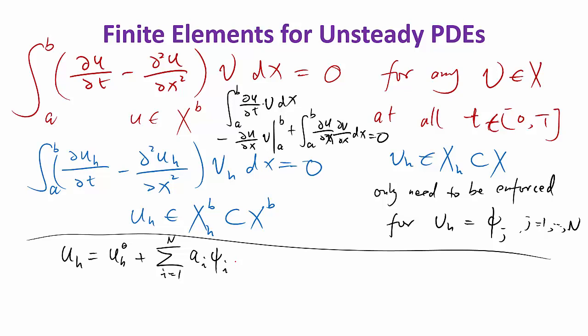This expansion is a little different from what we've used before, because u_h is a function of both x and t, instead of just x. The basis functions are just functions of x. What makes u_h a function of t is that the a's are functions of t. At different times the basis stays the same, but the linear combination — the a's — evolves in time.